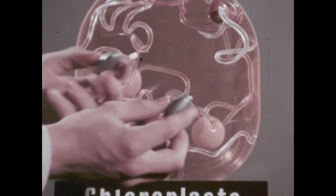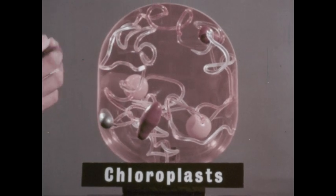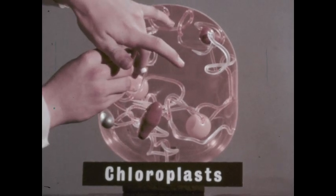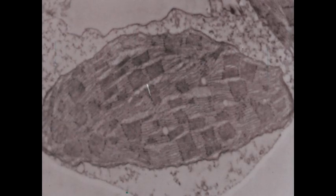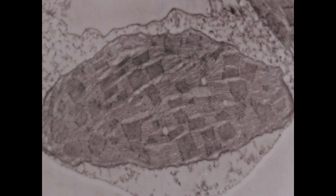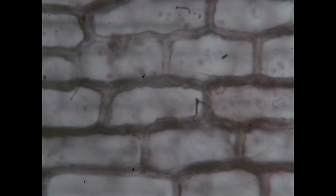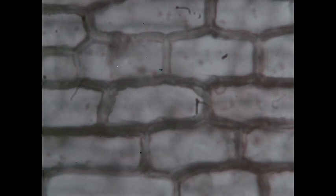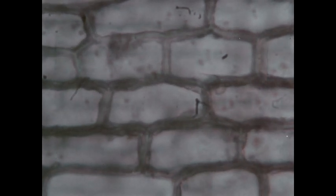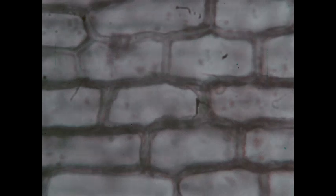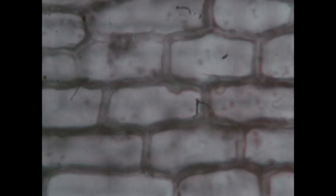Still another kind of structure, chloroplasts are found within the cytoplasm of green plant cells. Here, the electron microscope has magnified a single chloroplast — the large dark area — over 40,000 times. In this leaf section, we see the microscopic chloroplasts moving within the cells. It is within the chloroplasts that the chemical process called photosynthesis is accomplished. In photosynthesis, food is manufactured using the energy of sunlight.